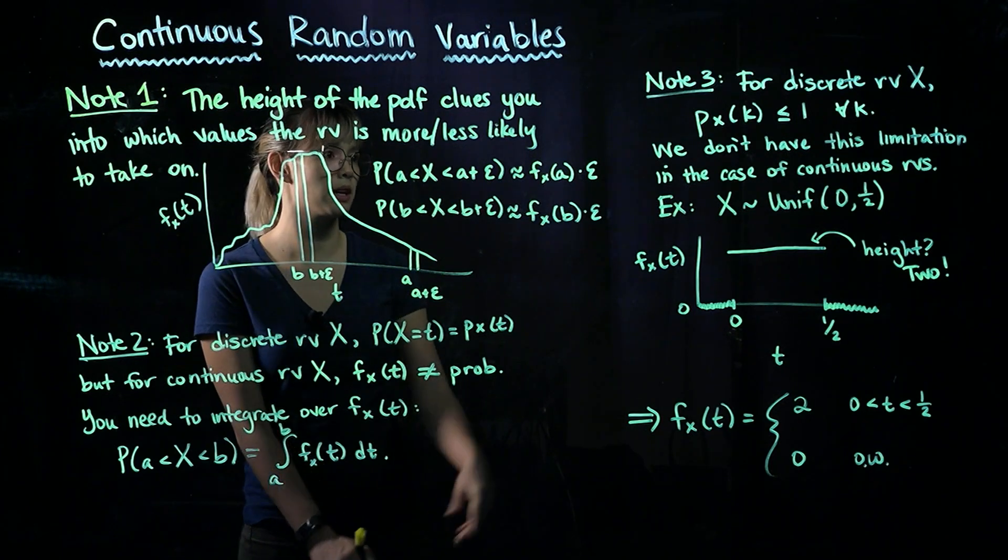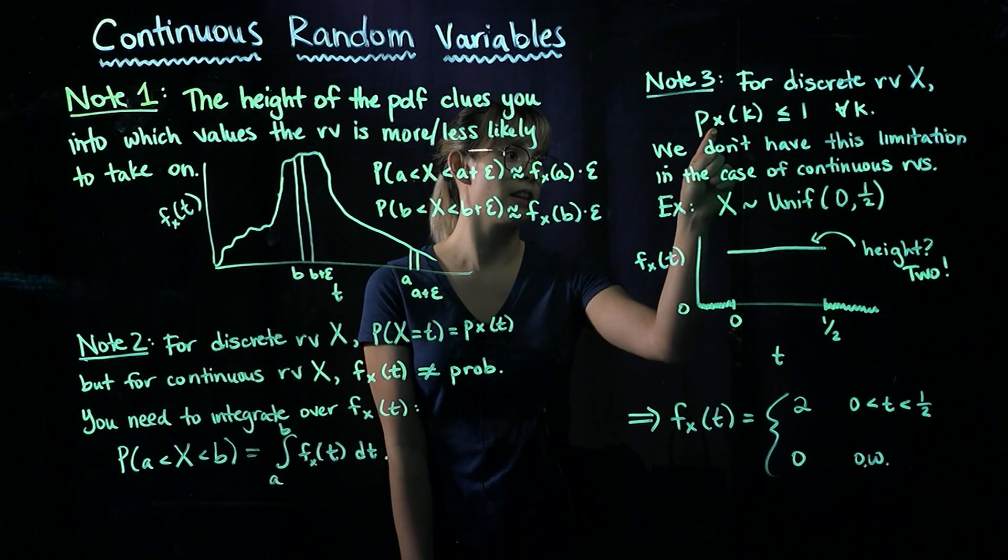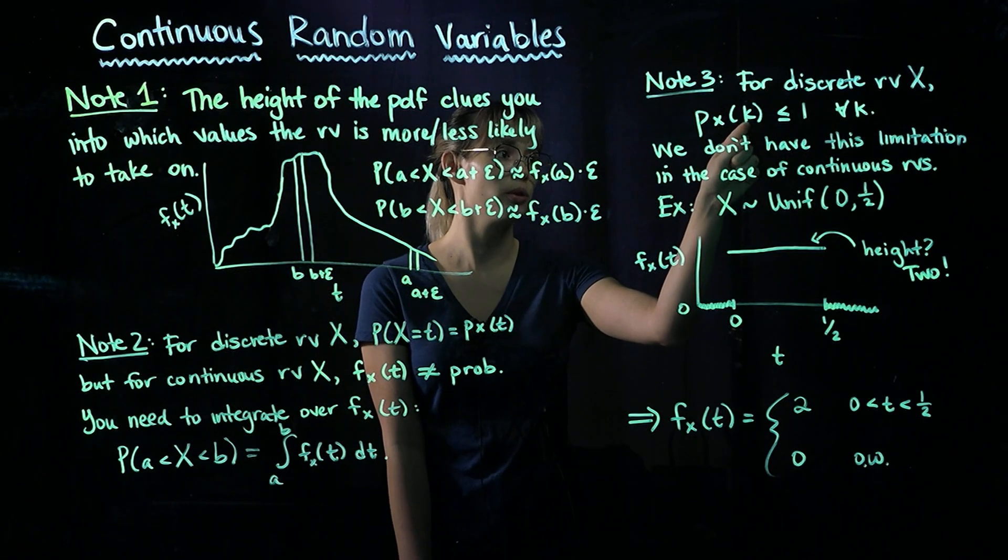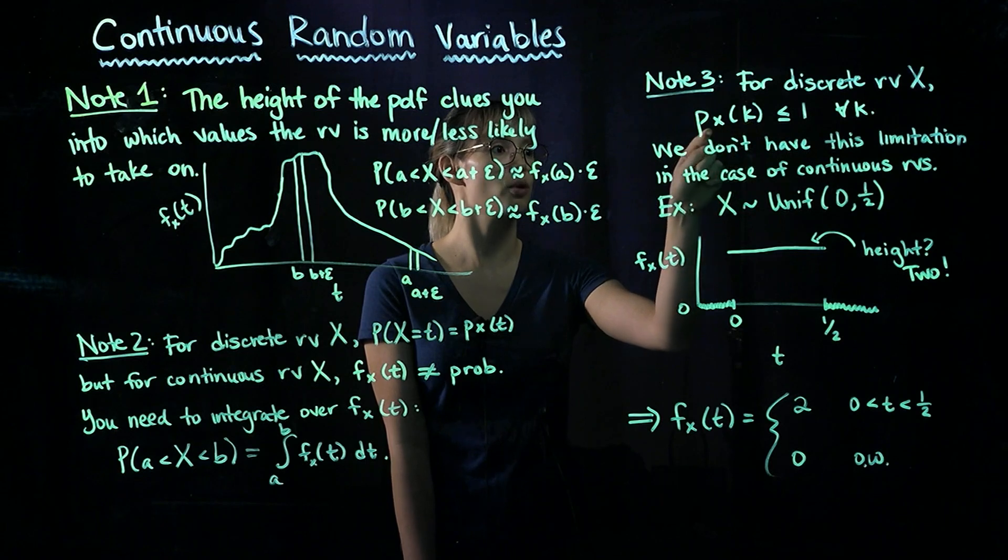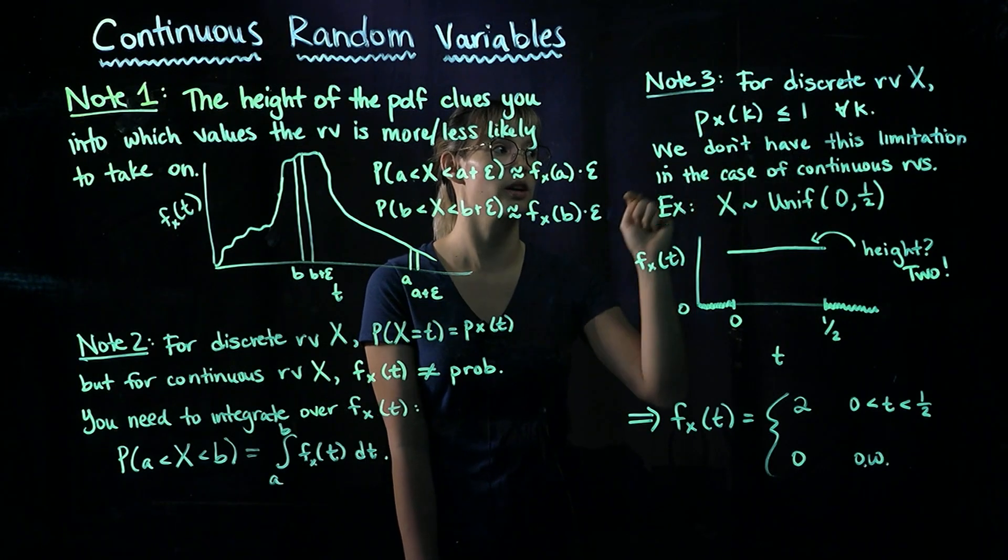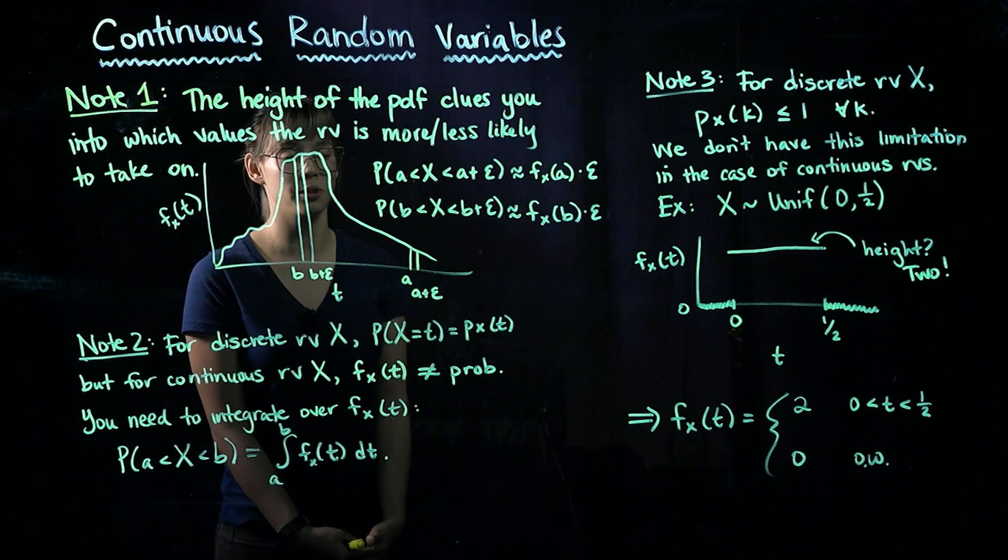So this is important because remember, the PMF represents the probability that our random variable is equal to, in this case, K. So of course, the probability has to be less than or equal to 1 for any value that the random variable takes on.